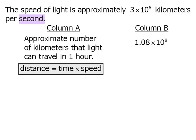So our first step here must be to convert one hour into seconds. Now one hour equals 3600 seconds. So we can think of column A as really asking us the approximate number of kilometers that light can travel in 3600 seconds.